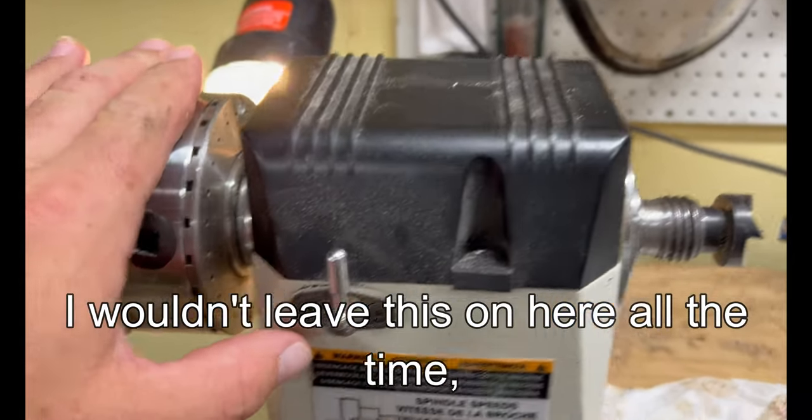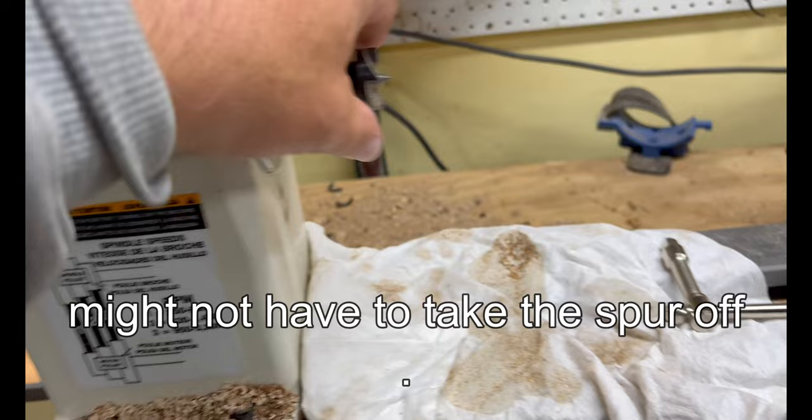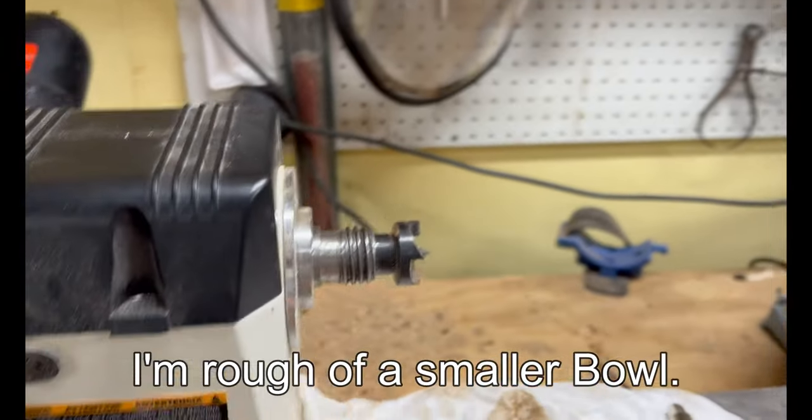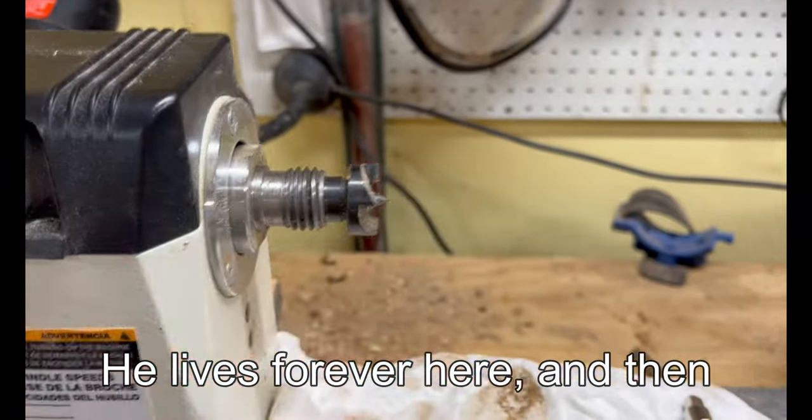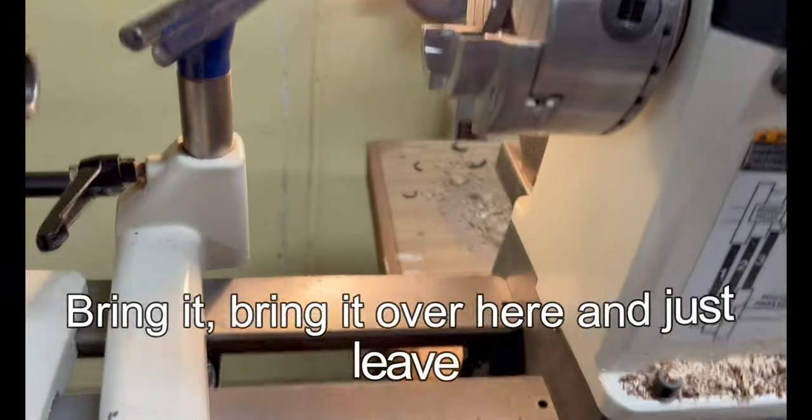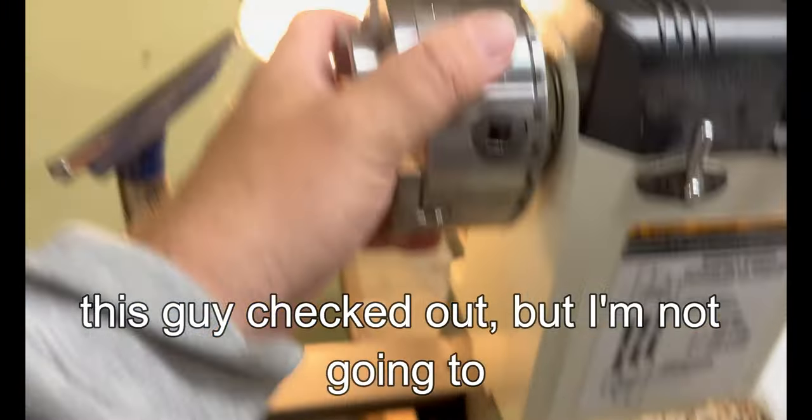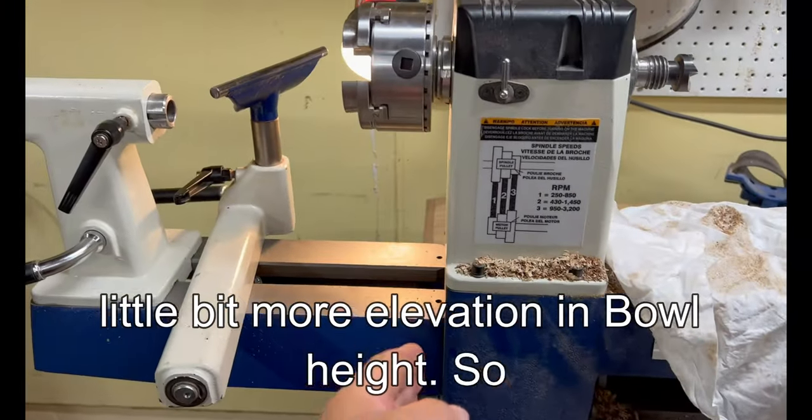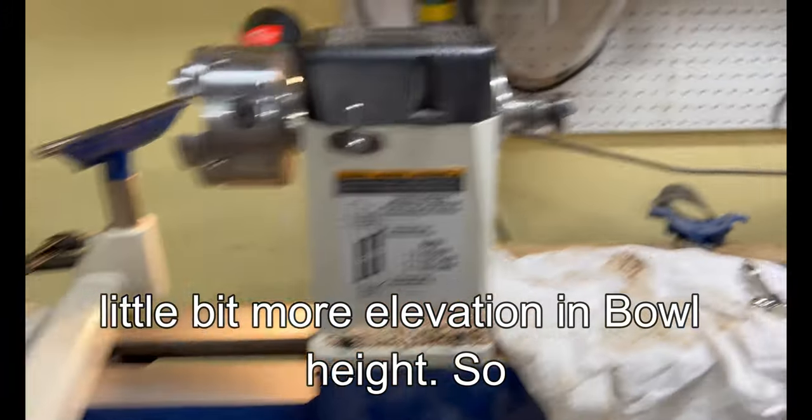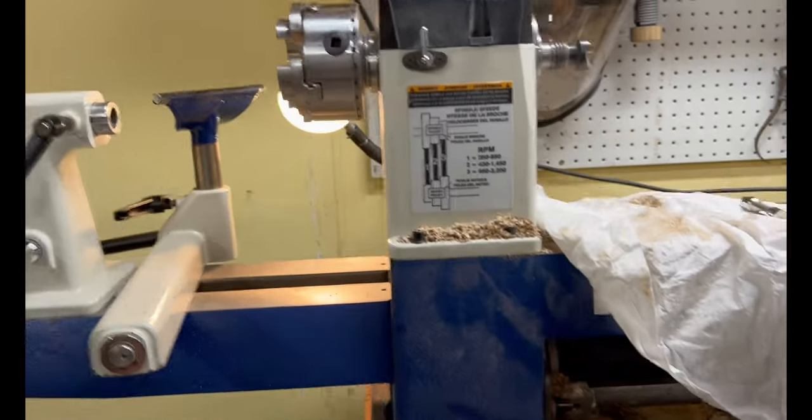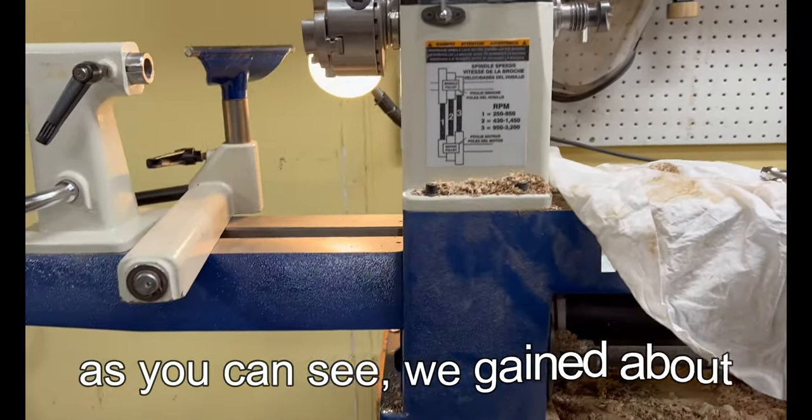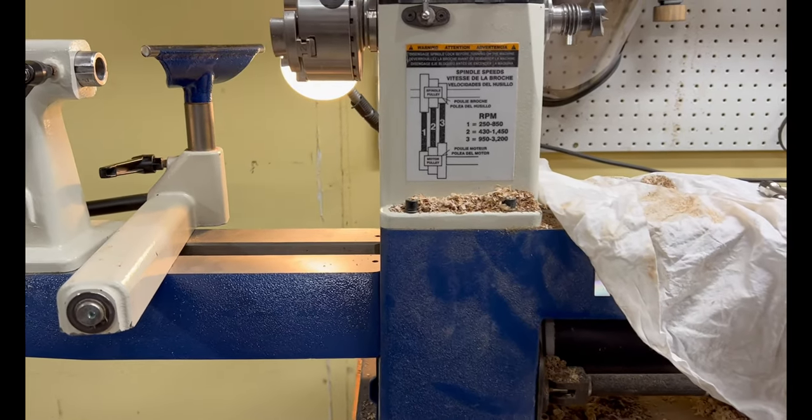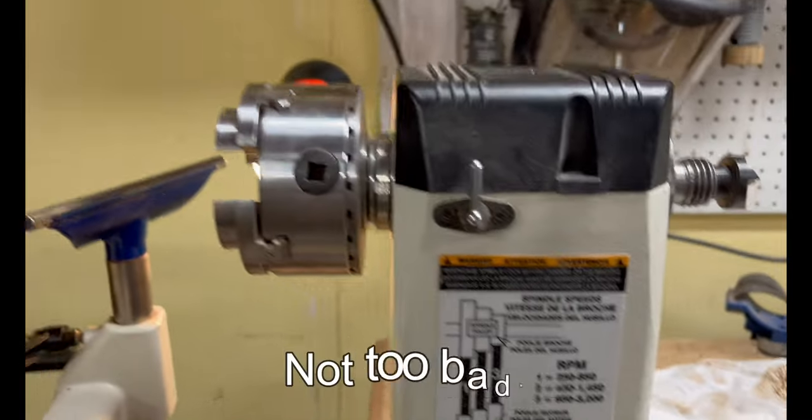Probably wouldn't leave this on here all the time. We might not have to take the spur off if I'm roughing up a smaller bowl. You leave the spur over here and then bring it over here and just leave this guy chucked up. But I'm not going to do that. The whole point of this is to gain a little bit more elevation and bowl height. As you can see, we gained about an inch or two. Not too bad.